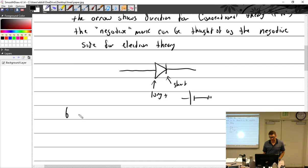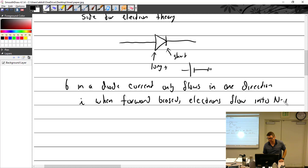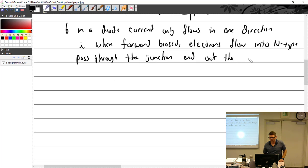It also kind of looks like a valve. If you look past the triangle, the line on the left is the long line, which is positive. This is the short line, which would be negative. In a diode, current only flows one way, in one direction when forward biased. Electrons flow into the n-type, pass through the junction, and out the p-type.